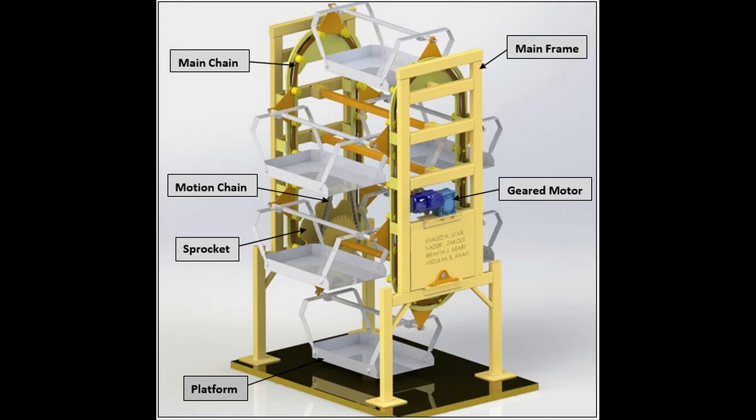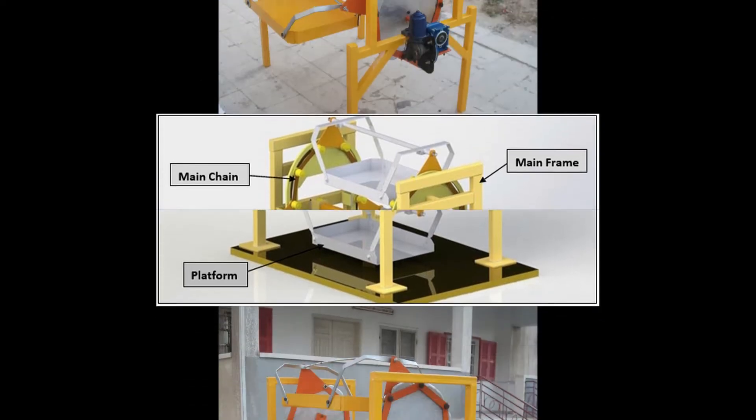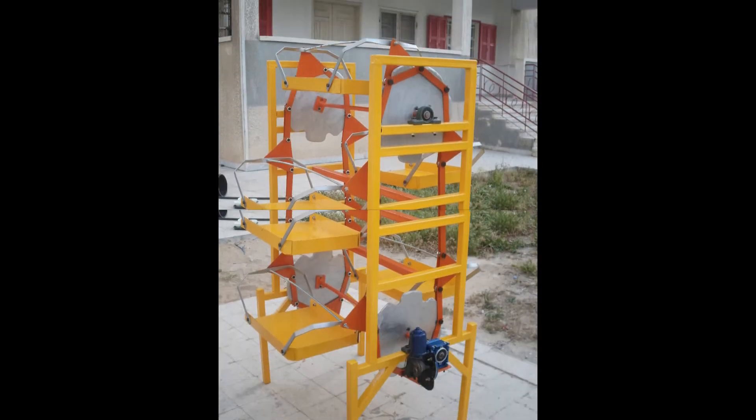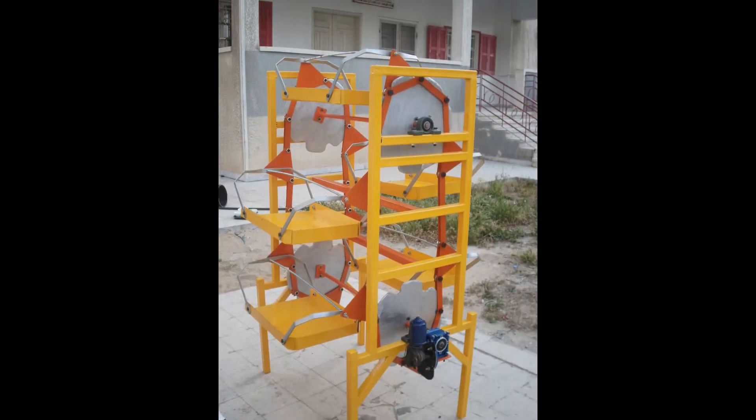The sprocket in turn will transfer the rotary motion from the motion chain to the main chain. The platforms are mounted on the main chain, so when it rotates, the platforms will rotate as well.